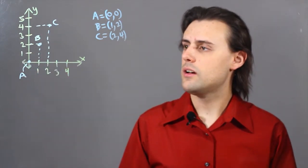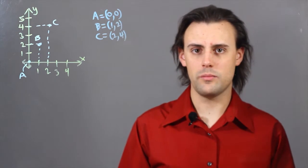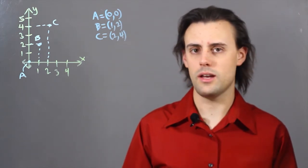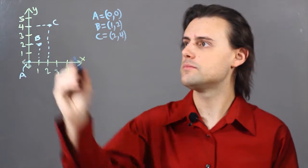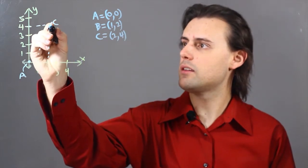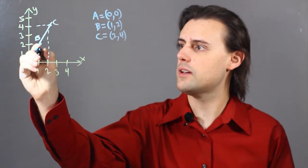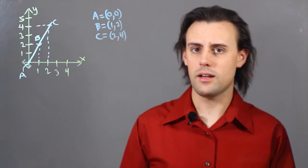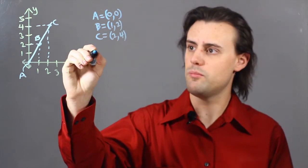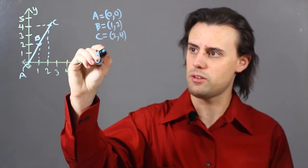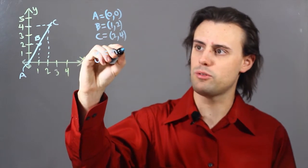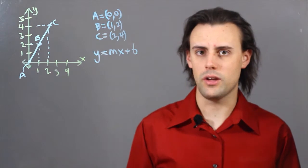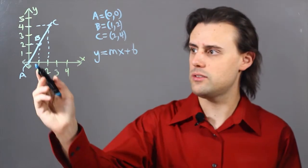A direct variation essentially implies that there's a linear relationship between the x and the y coordinates. So, if I connect these three points, I end up with a straight line, and I can characterize this using the slope-intercept equation, which is y = mx + b, where b is the y-intercept. In this case, it's 0.